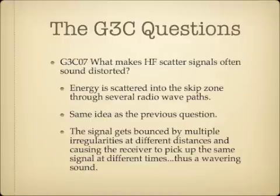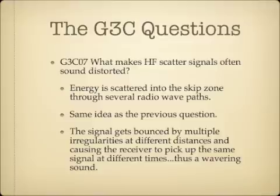What makes HF scatter signals often sound distorted? The answer is that energy is scattered into the skip zone through several radio wave paths. The signal gets bounced around by multiple irregularities at different distances in the ionosphere, causing the receiver to pick up the same signal at different times, resulting in a wavering sound.